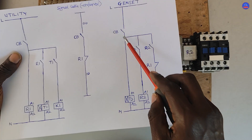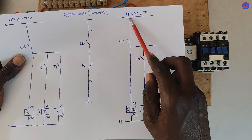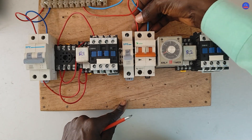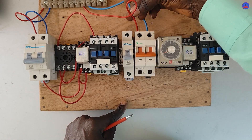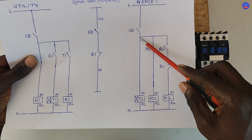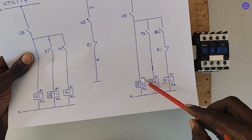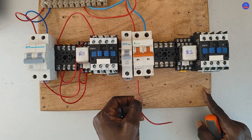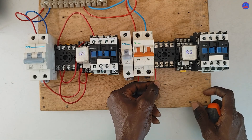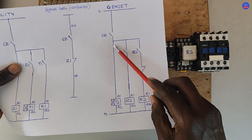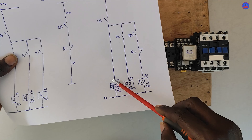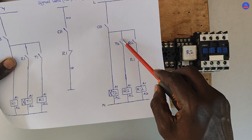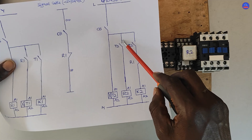We are moving to the generator side. We tap from the generator output to one side of the breaker — this is the generator breaker, so this is the live. From the output of the breaker, it goes to terminal A1 on the timer, which is terminal number 7. We can equally tap from this side or this side. So we tap from A1 to one side of the open contact on the timer, which is terminal number 8.